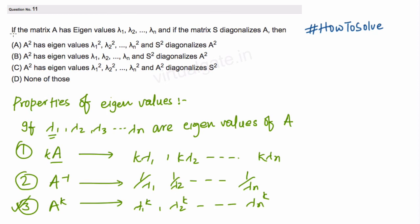The problem says: if matrix A has eigenvalues λ₁, λ₂, λₙ and matrix S diagonalizes A, then which one is true? We'll understand the diagonalization part later. First, let us solve the first part.